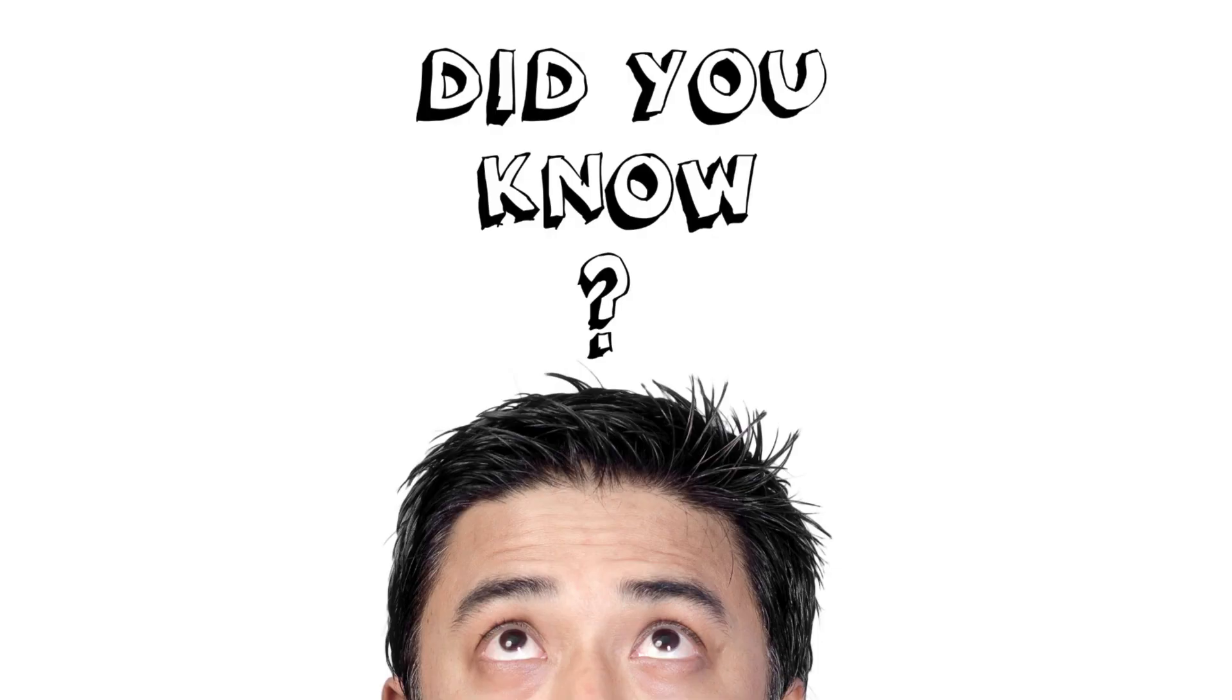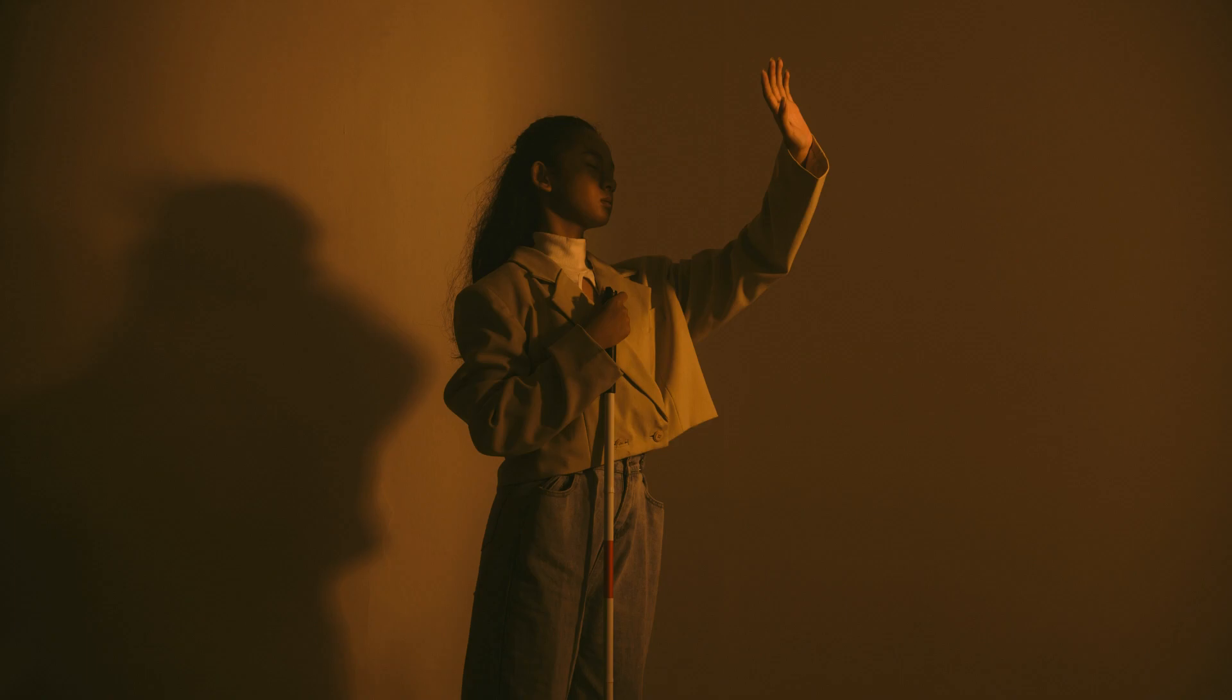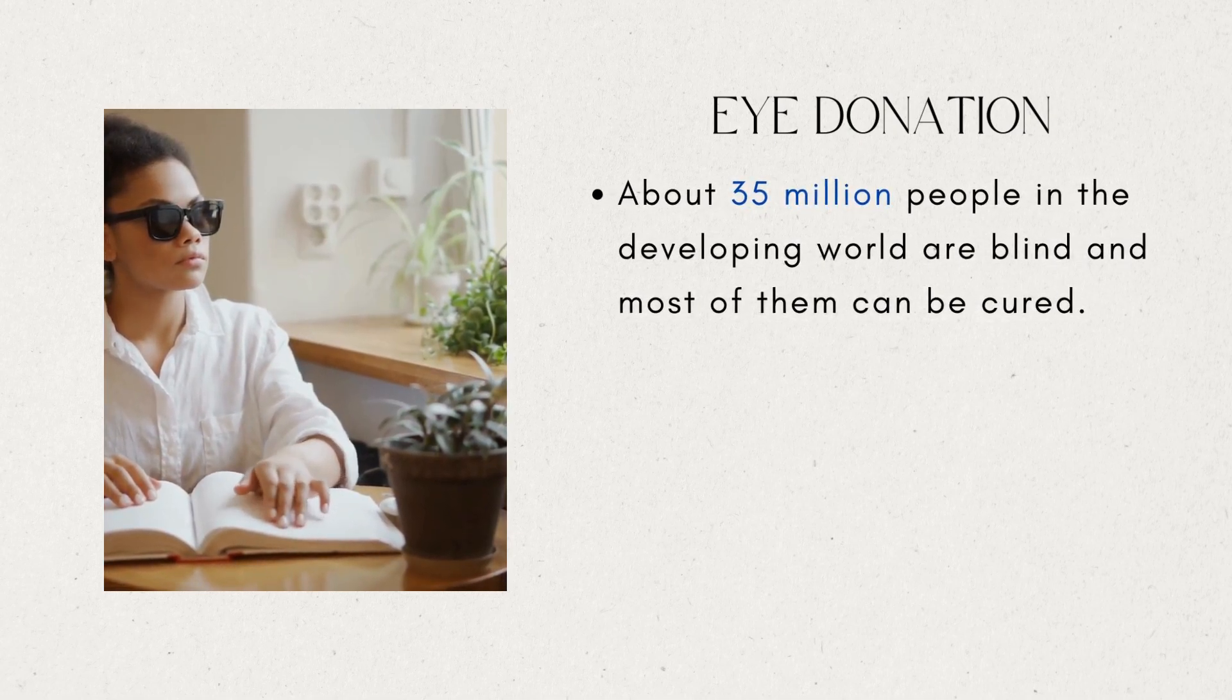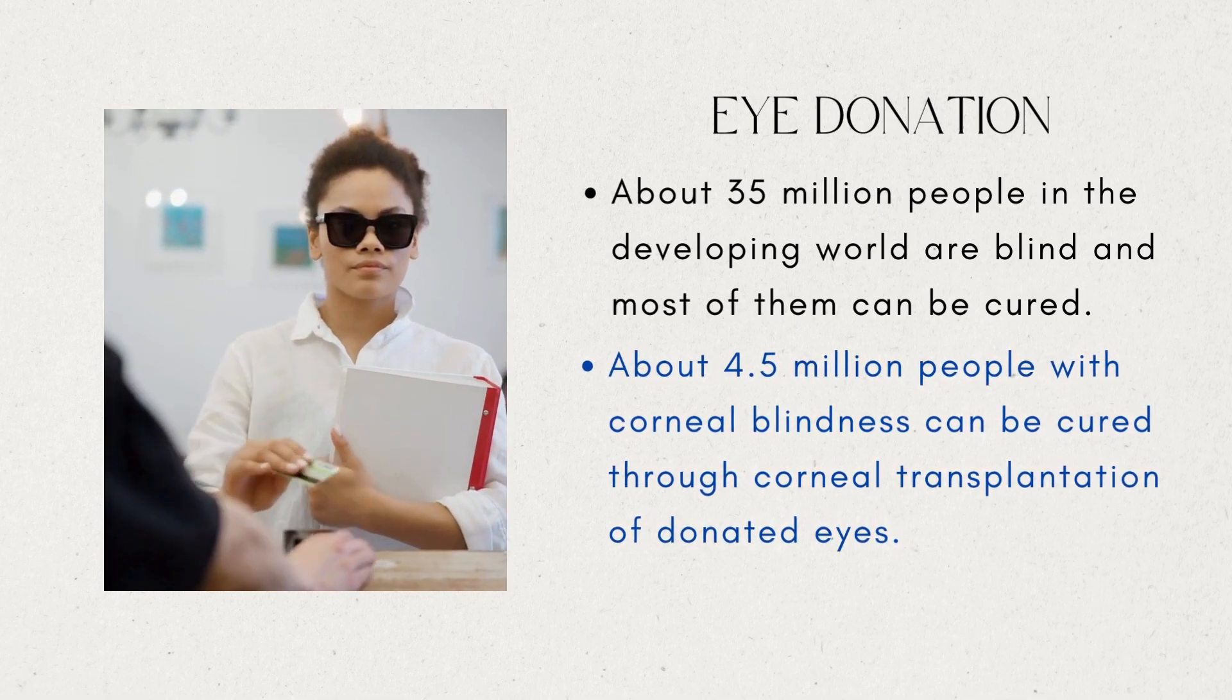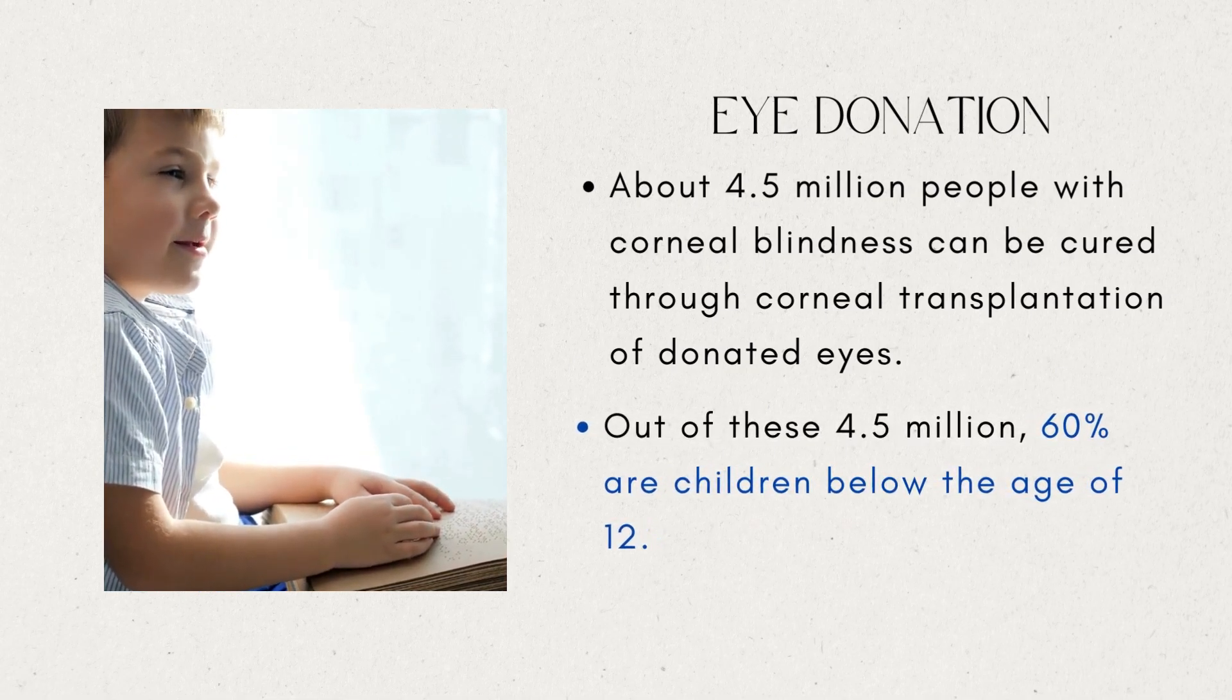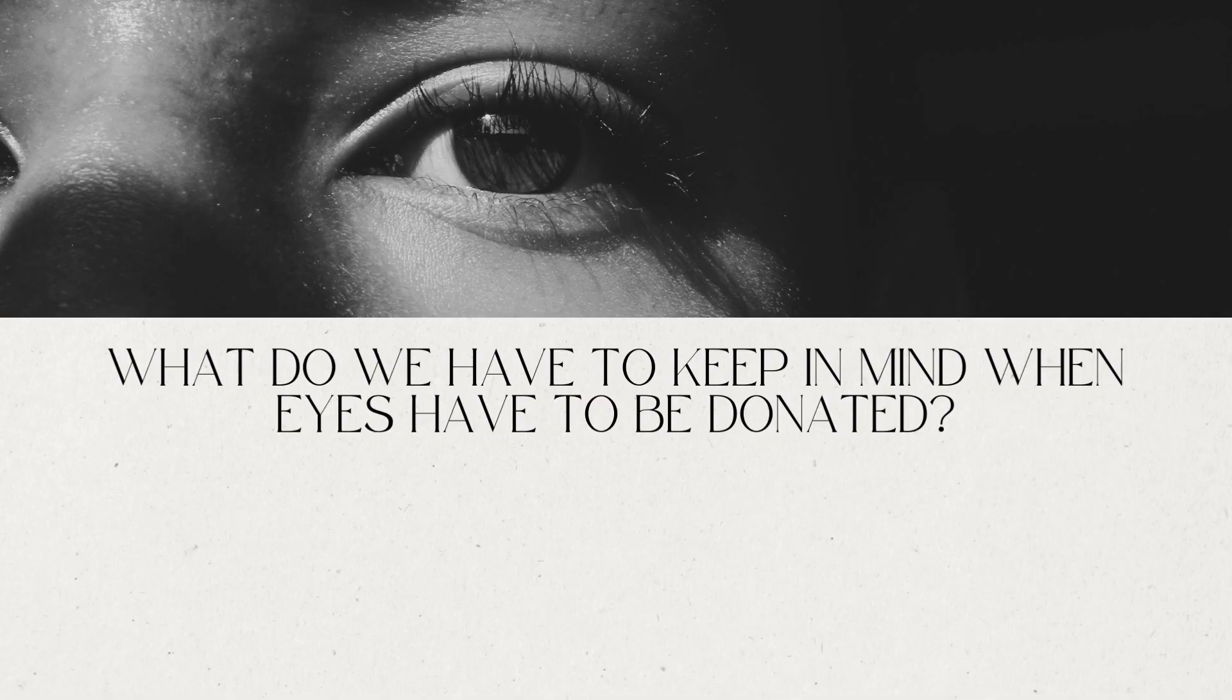Do you know that our eyes can live even after our death? By donating our eyes after we die, we can light the life of a blind person. About 35 million people in the developing world are blind and most of them can be cured. About 4.5 million people with corneal blindness can be cured through corneal transplantation of donated eyes. Out of these 4.5 million, 60% are children below the age of 12. So, if we have got the gift of vision, why not pass it on to somebody who does not have it?